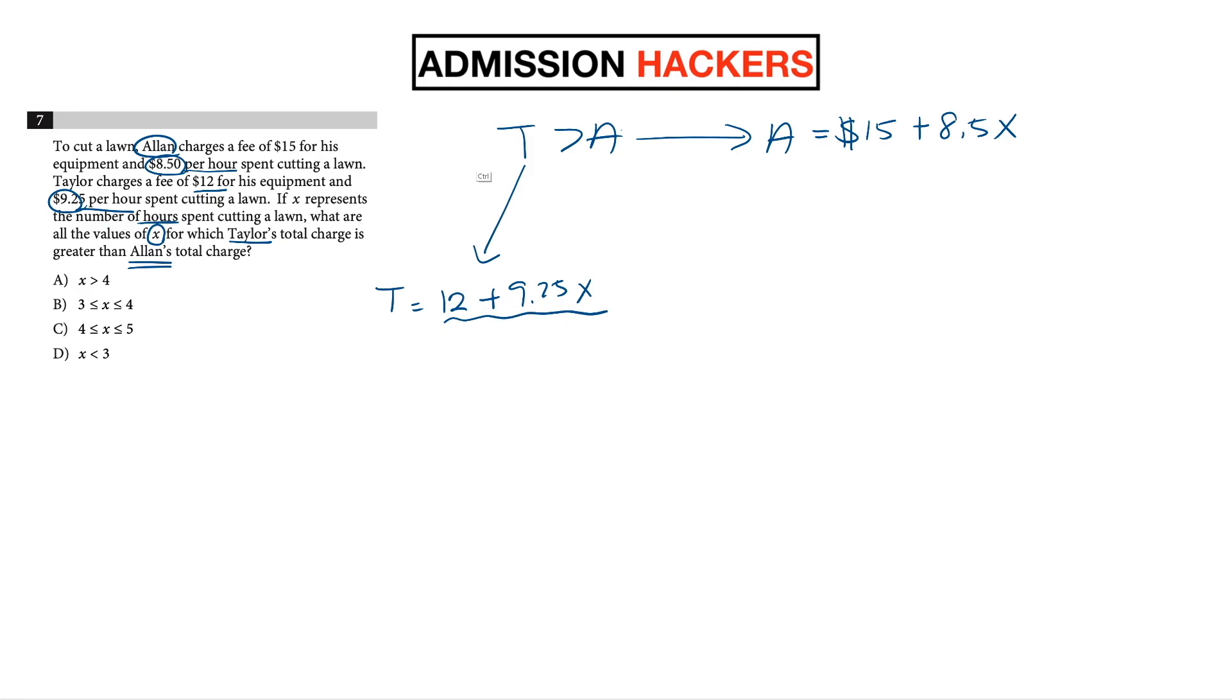So what do we do now? We just put the equation into the inequality. This equation to that one, this equation to that one. So it's going to be 12 plus 9.25X is greater than 15 plus 8.5X. So all we have to do is simplify this and find out what the value of X is, and we're going to know which answer it is. So what do we do? We just move things around, subtract 12 from both sides, we get 9.25X is greater than 3 plus 8.5X. And you subtract 8.5X to isolate the X. And if you do that, 9.25 minus 8.5 is going to be 0.75X is greater than 3.